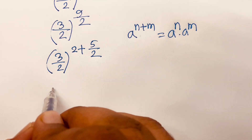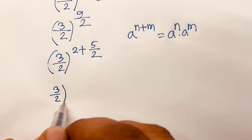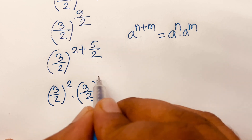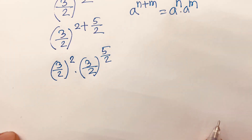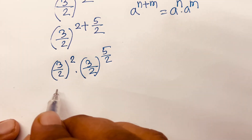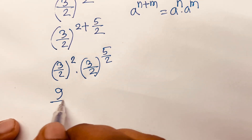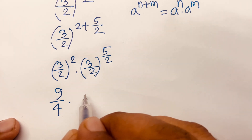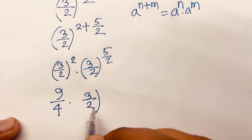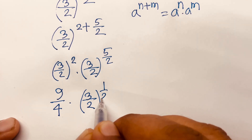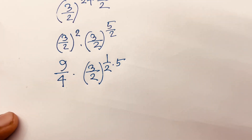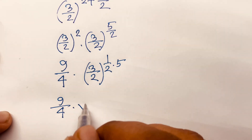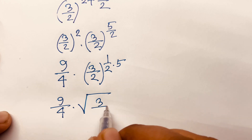Applying the rule, we get (3/2)² times (3/2)^(5/2). Then (3/2)² = 3²/2² = 9/4. For (3/2)^(5/2), we can write the exponent 5/2 as (1/2) × 5, so this becomes the square root of (3/2) to the power 5.